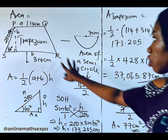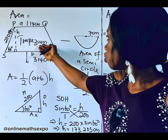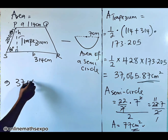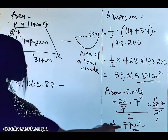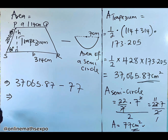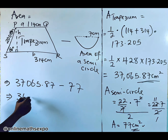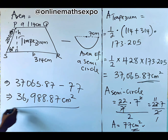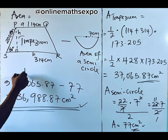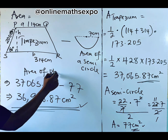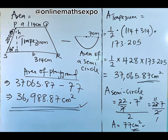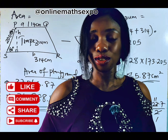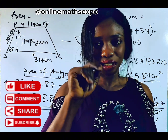To calculate the area of the playground: area of trapezium minus area of semi-circle = 37,065.87 minus 77 = 36,988.87 square centimeters. So this becomes the area of the playground. I hope this really helps you a lot. Share this so that others will learn with you. You can also ask questions in the comments — I will be there with you. Thank you for engaging. Bye-bye.